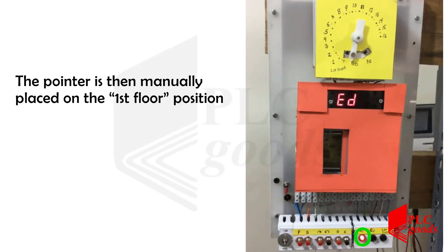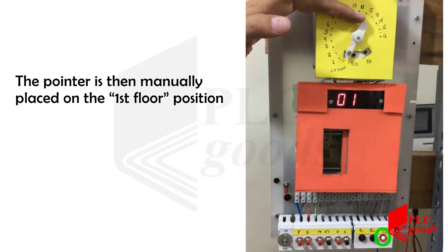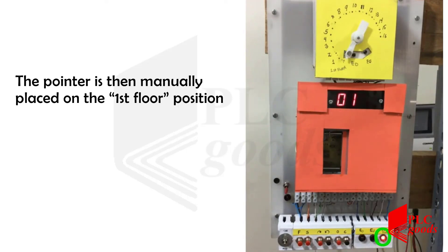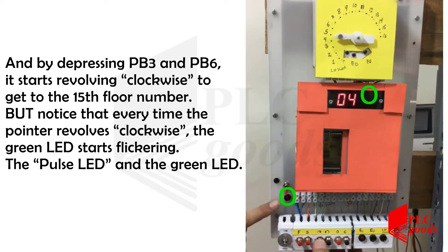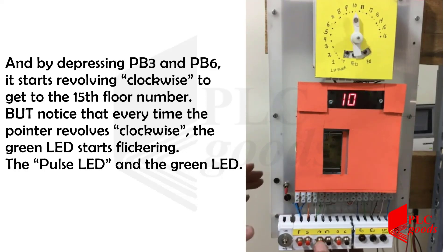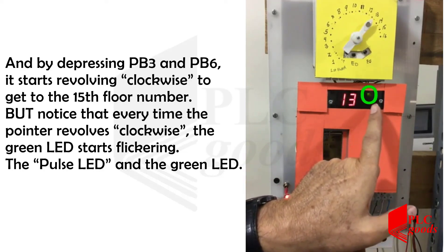The pointer is then manually placed on the first floor position. By depressing PB3 and PB6, it starts revolving clockwise to get to floor number 15. Notice that every time the pointer revolves clockwise, the pulse LED and the green LED start flickering.